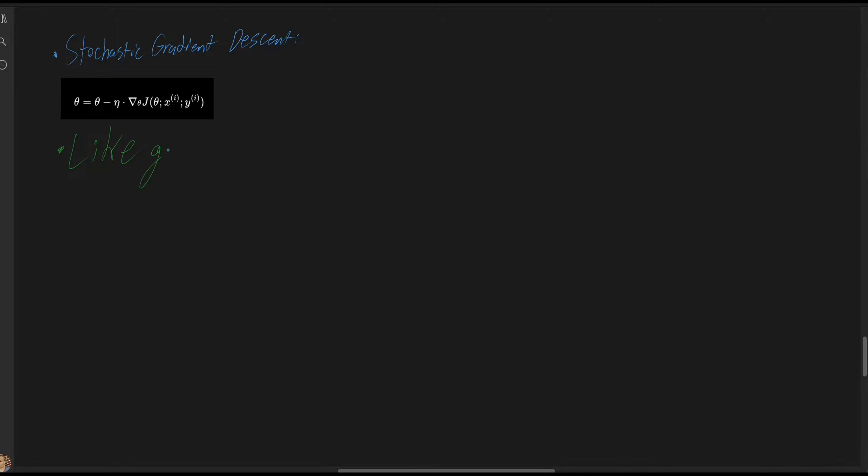Stochastic gradient descent is like gradient descent, but it processes faster.